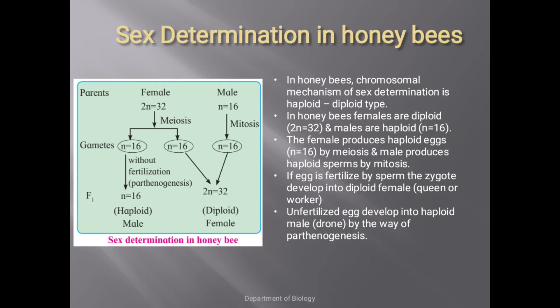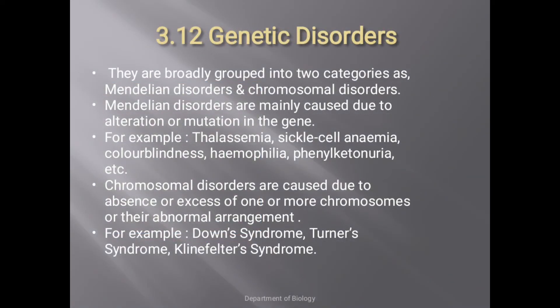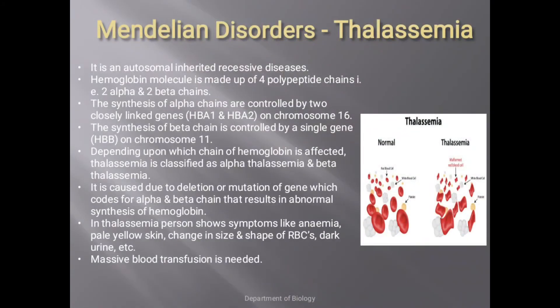The next important topic is genetic disorders. Genetic disorders are broadly grouped into two categories: Mendelian disorders and chromosomal disorders. Mendelian disorders are mainly caused due to alteration or mutation in a gene — for example, thalassemia, sickle cell anemia, color blindness, hemophilia, and phenylketonuria. Chromosomal disorders are caused due to absence, excess, or abnormal arrangement of chromosomes — for example, Down syndrome, Turner syndrome, and Klinefelter syndrome.